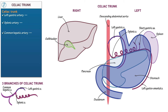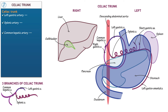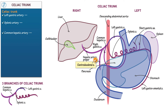Next, return to the celiac trunk and show that the common hepatic artery travels to the right. As it does so, it gives off the right gastric artery, which anastomoses with the left gastric artery along the border of the stomach. Then show that the common hepatic artery splits to form two vessels: the hepatic artery proper, which travels to the liver, and the gastroduodenal artery, which — as its name implies — travels to the stomach (gastro) and the duodenum of the small intestine.